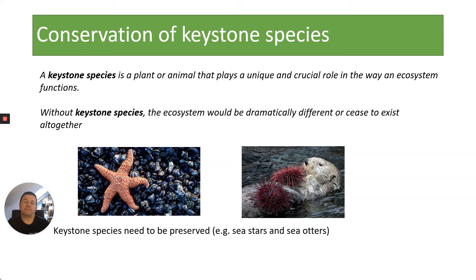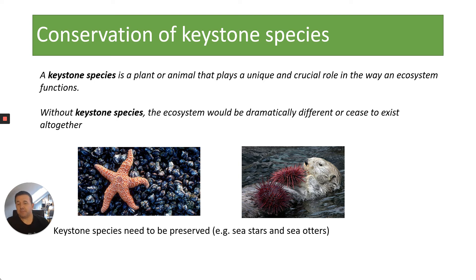When we talk about conservation of certain species we're talking about keystone species. These are really important plants and animals that play a unique and crucial role in how the ecosystem functions. Without those, the whole ecosystem is dramatically different or could cease to exist. For example, here are a couple of examples — a sea star and a sea otter — they play a vital part in the food chain and in cementing that ecosystem, and with them gone it would affect many other species.